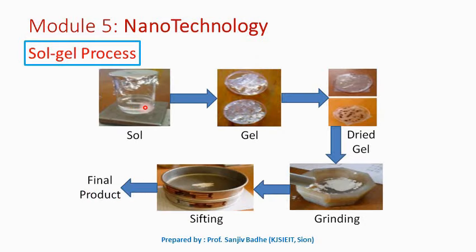So here we have a sol — a type of colloid in which solid particles are suspended in a liquid. When the liquid is evaporated, what remains is a semi-rigid mass which we call a gel. In a gel, the particles or ions left behind join together to form a continuous network.